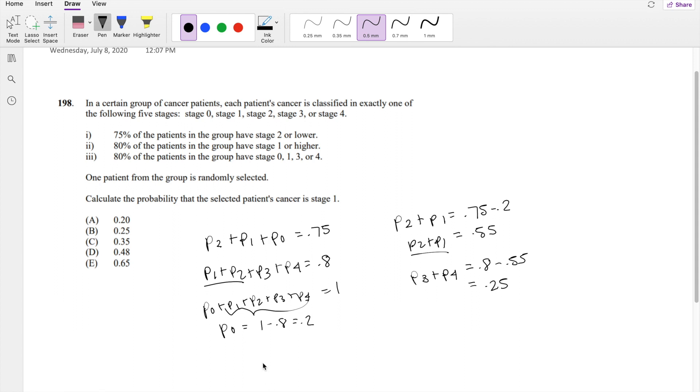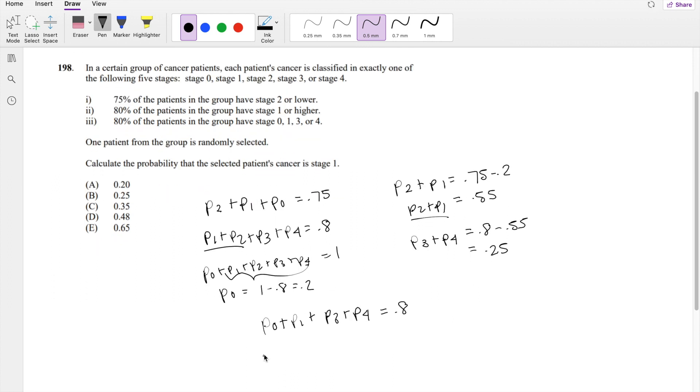And lastly, they're saying a patient is in stage 0, stage 1, stage 3, or stage 4 with a probability of 0.8. Okay, the good thing is we already know what the probability of 0 is. That's 0.2.